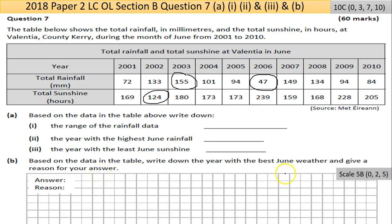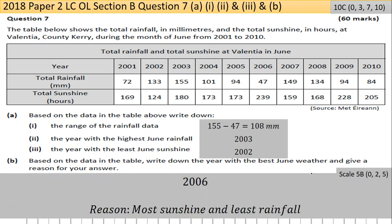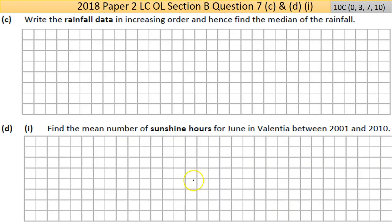I would argue from my perspective that 2006 is the best year — lots of sun, very little rain. Any year you choose should be backed up with a reasonable answer. The reason I gave was: more sunshine and least rainfall.